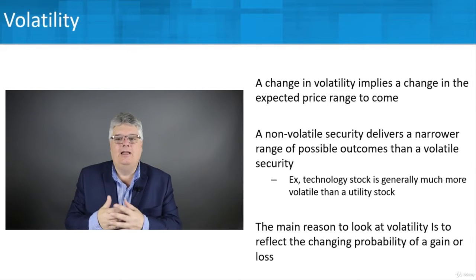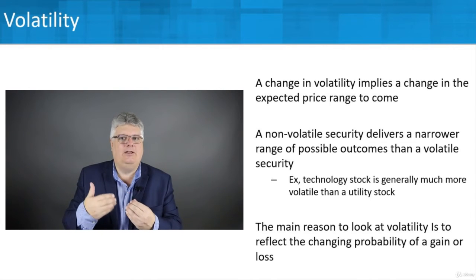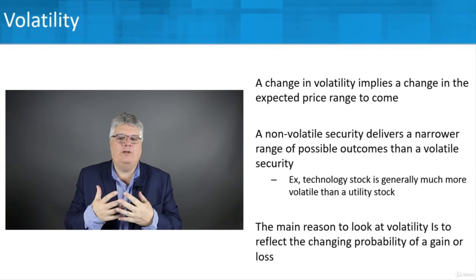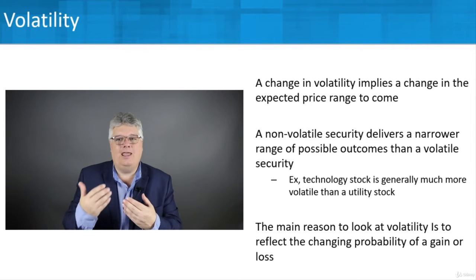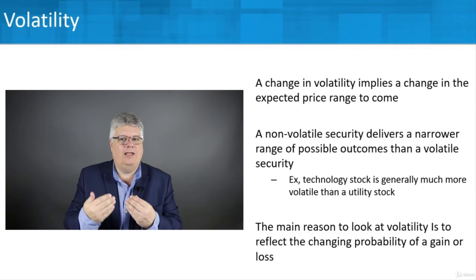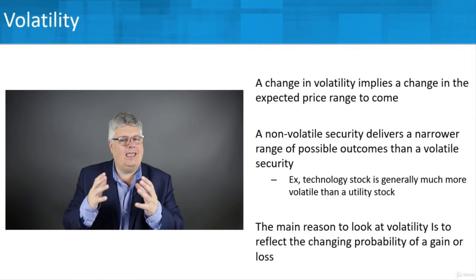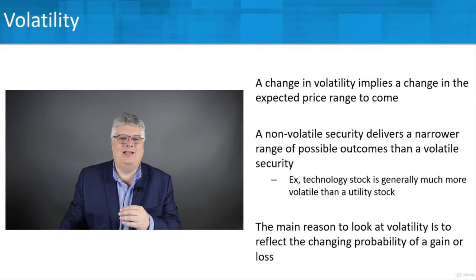A non-volatile security delivers a narrower range of possible outcomes than a more volatile one. A typical technology stock or Bitcoin or cryptocurrency is generally more volatile than something like a utility stock that has very little variation in price. The main reason to look at volatility is to reflect the changing probability of a gain or loss — what are the possible outcomes if I make a trade, and how can I use volatility to make it work in my favor?